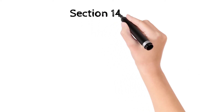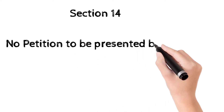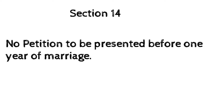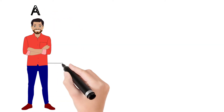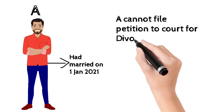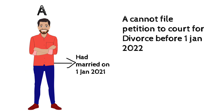Next we have Section 14, which provides that no person can present a petition for divorce in court within one year of marriage. He must wait for one year before filing the petition. For example, if the marriage took place on 1 June 2021, the person can only file a petition for divorce in court after 1 June 2022.